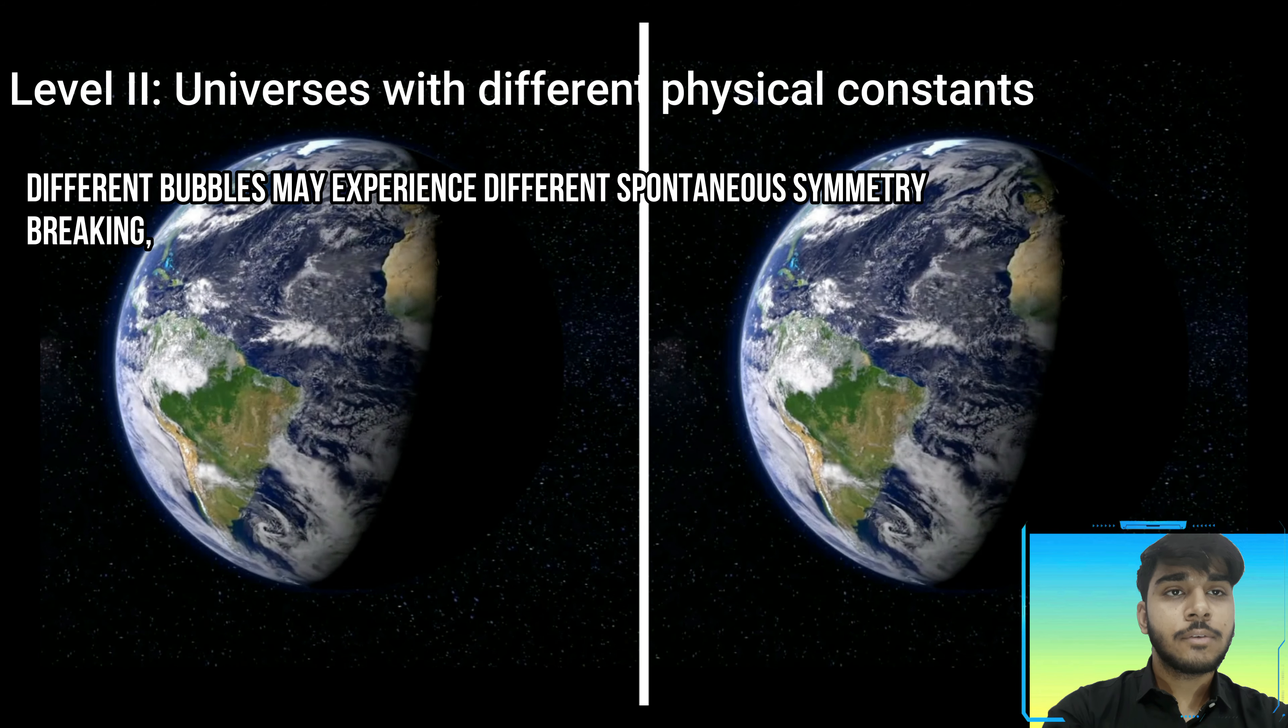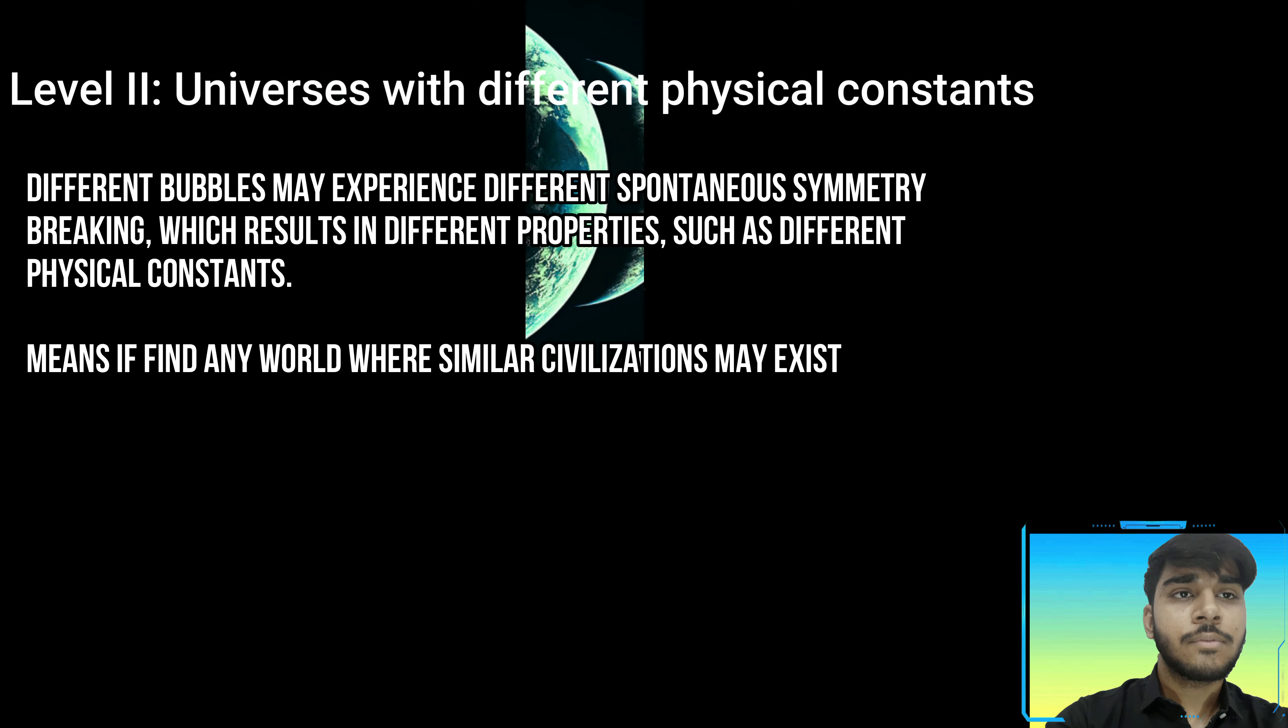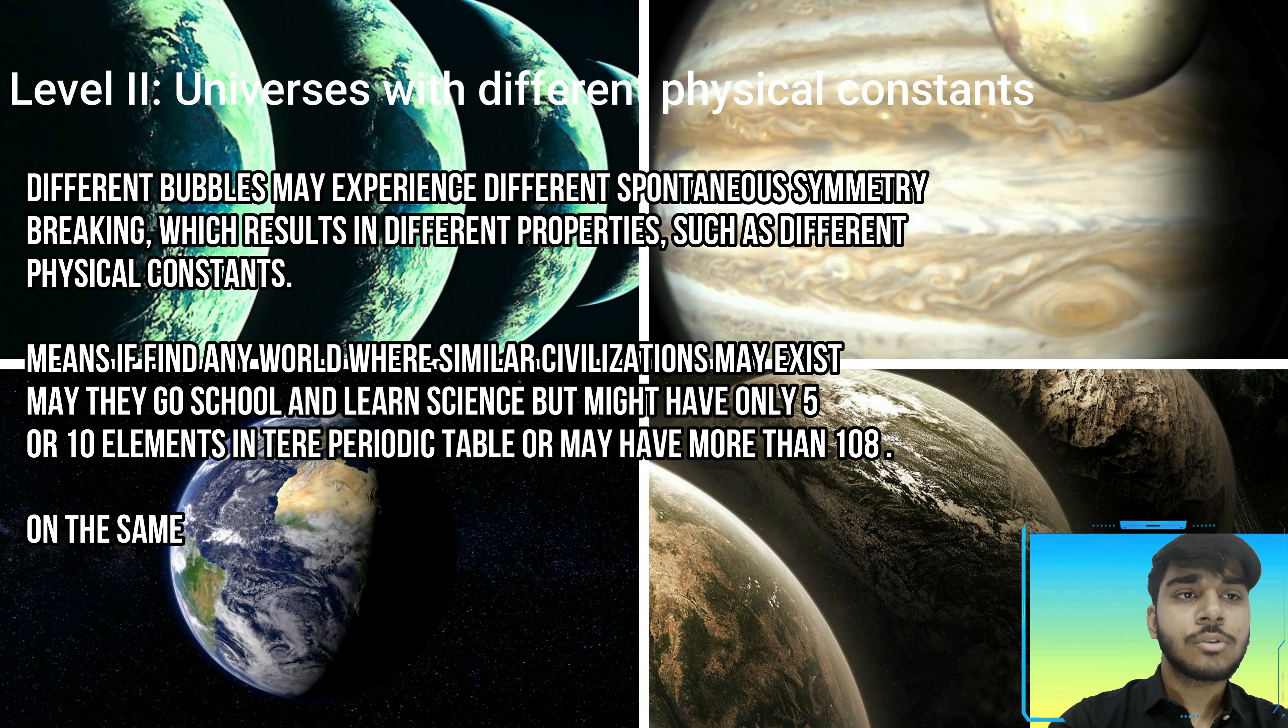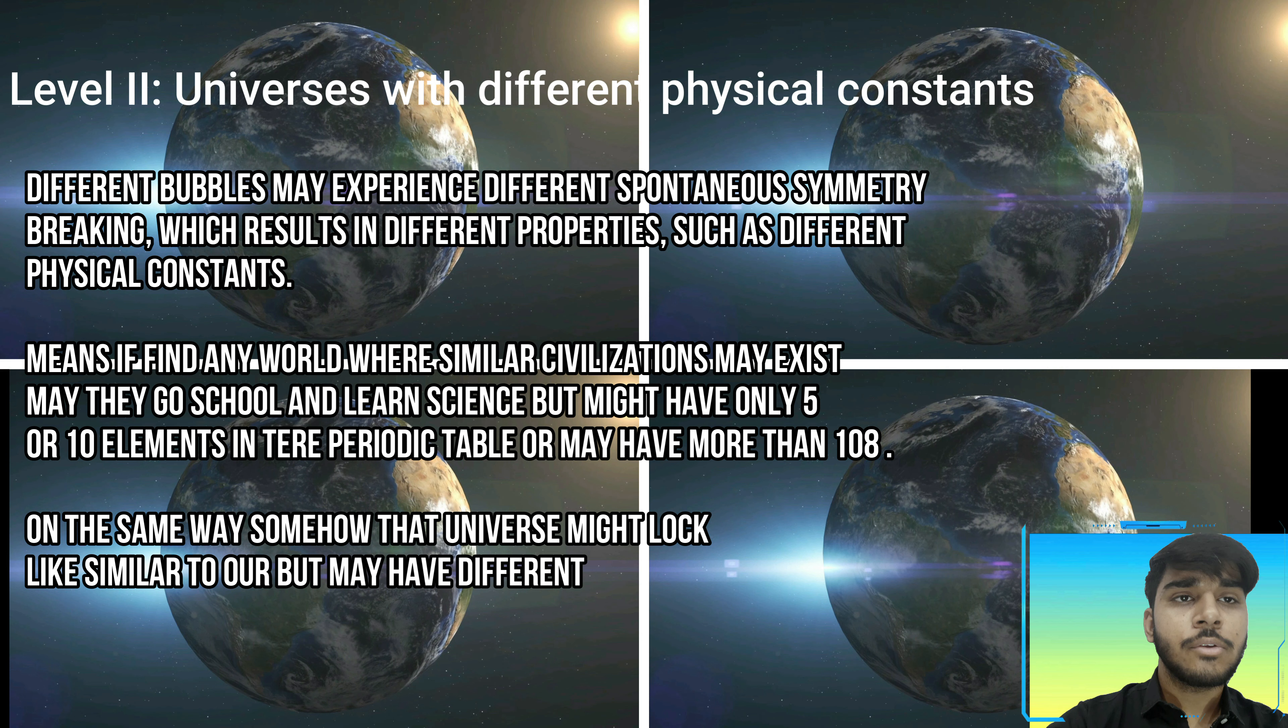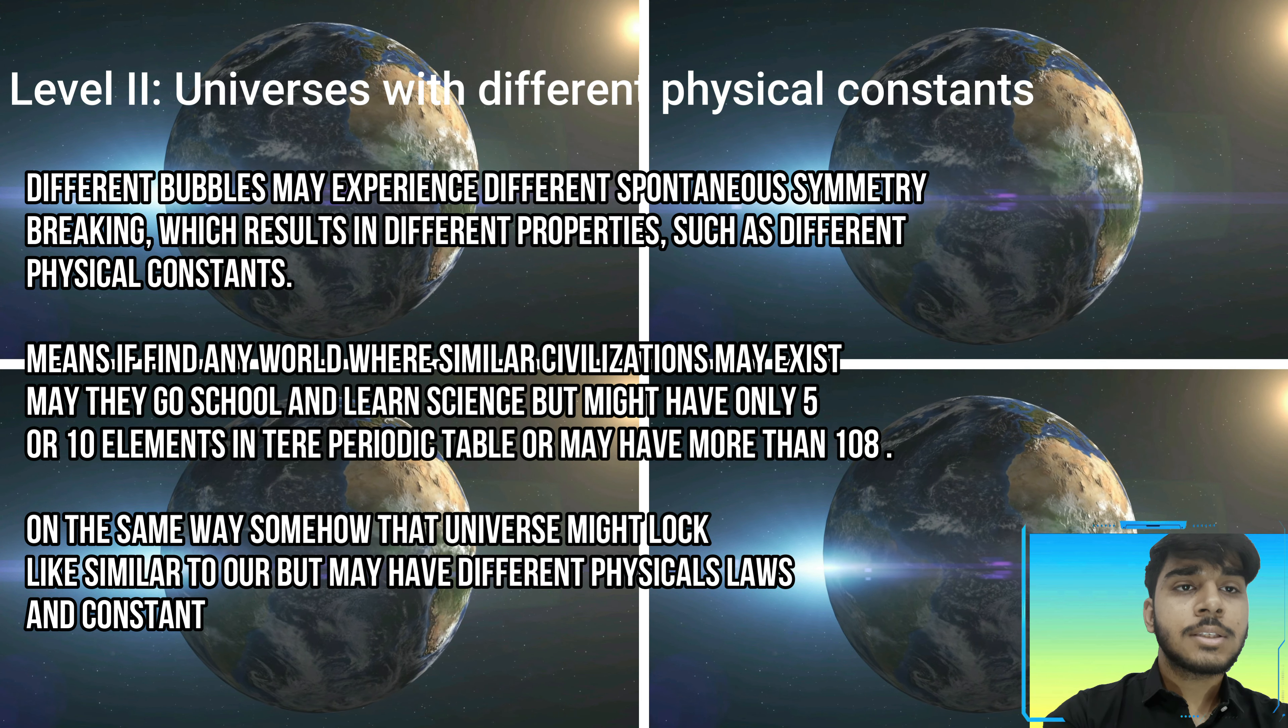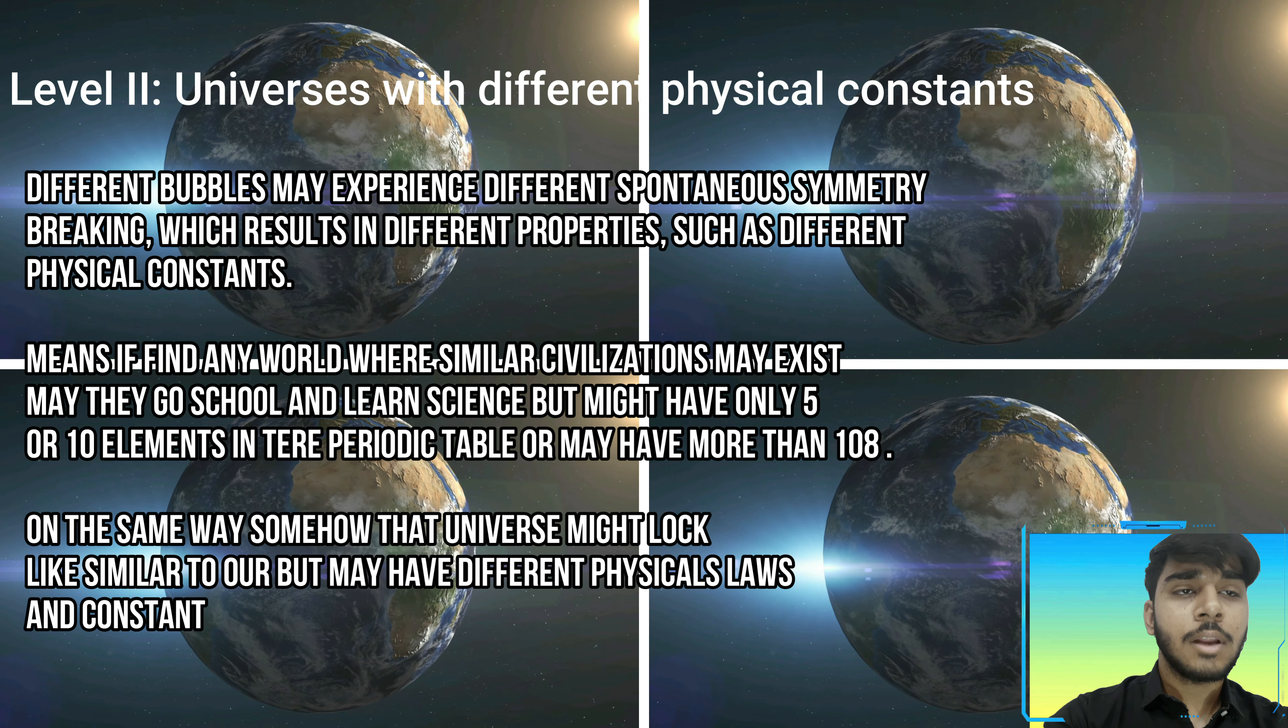Level Two: Universes with different physical constants. In this level, he considers a universe as a bubble. Different bubbles may experience different spontaneous symmetry breaking, which results in different properties such as physical constants. This means if we find a similar world or similar universe where similar civilizations live like us and they also go to school and maybe they learn science in their school, but maybe they have only 10 or 5 elements in their periodic table, or maybe they have more than ours.